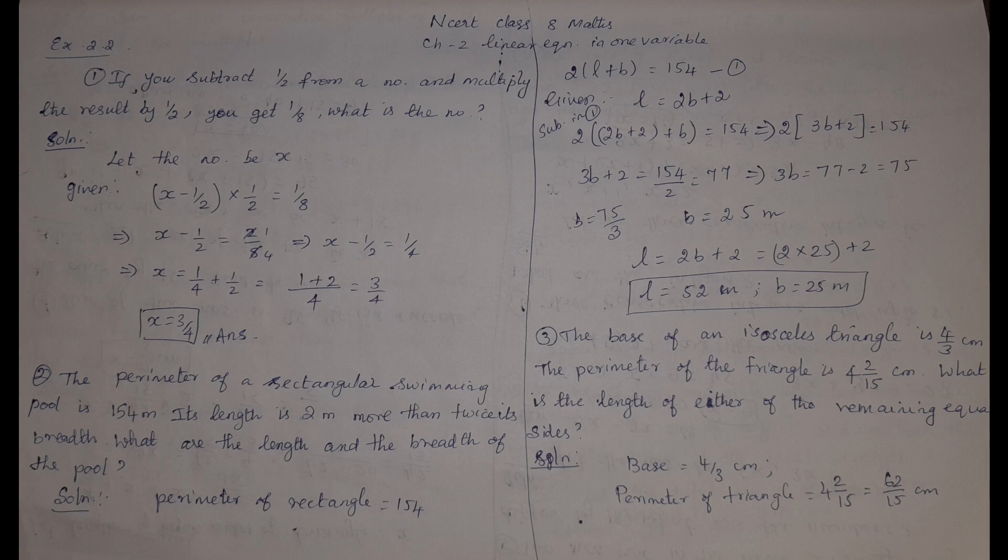Second problem: the perimeter of a rectangular swimming pool is 154 metres. Its length is 2 metres more than twice its breadth. What are the length and breadth of the pool? Perimeter of rectangle formula is 2 into (L plus B), so 2(L + B) = 154. That is the first equation.